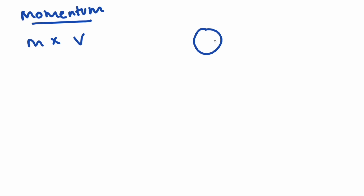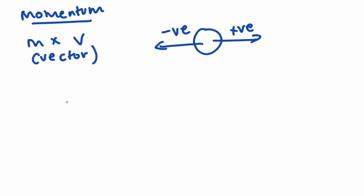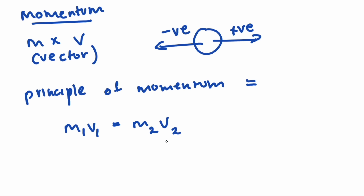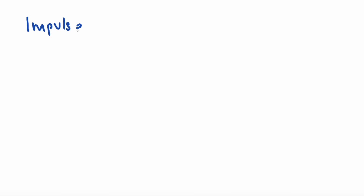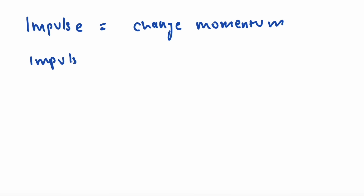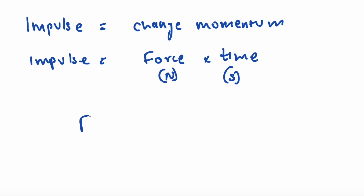Momentum equals mass times velocity. The momentum can be either positive or negative depending on the direction. The principle of conservation of momentum states that the momentum before collision equals the momentum after collision. Impulse is the change in momentum, and is the force times the time taken, measured in newtons and seconds.